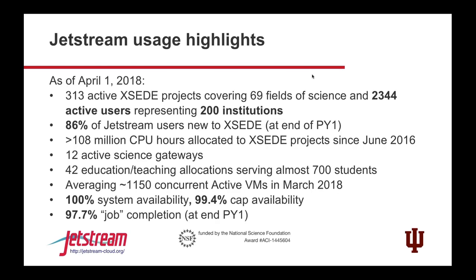Usage highlights as of April 1st: 313 projects, 200 institutions, over 2,300 users. One thing we're very proud about is that 86% of Jetstream users are new to XSEDE — they had not run on any other XSEDE resource other than Jetstream, which means we are hitting new users and folks that are not just the usual suspects. Since that was one of our tasks from the NSF, that says we're starting to hit it. We've allocated 108 million CPU hours since we started counting, have about 1,150 concurrent VMs as of March 2018, and are serving about 700 students directly with education allocations.